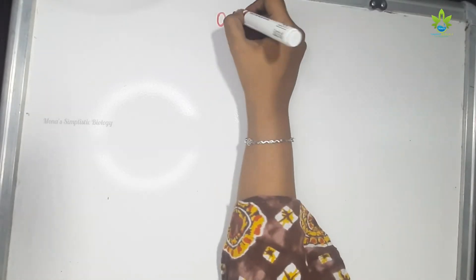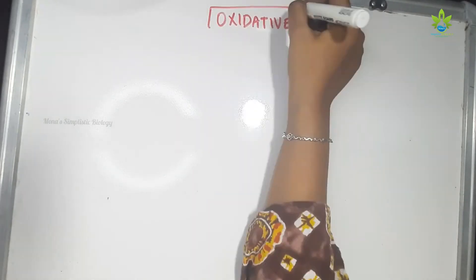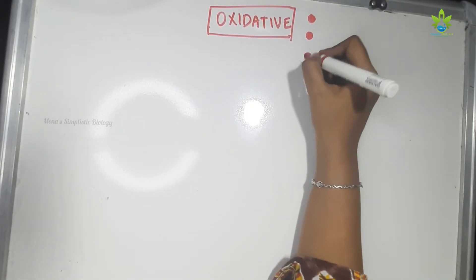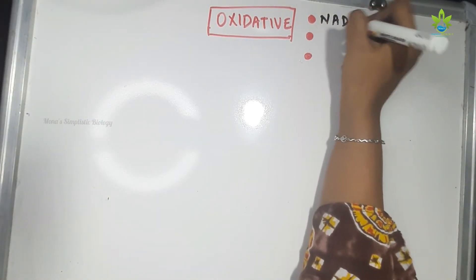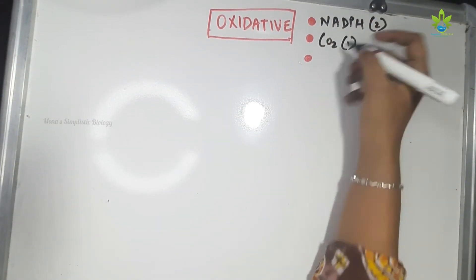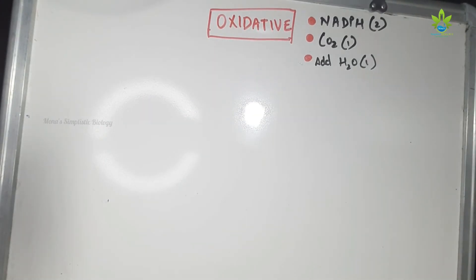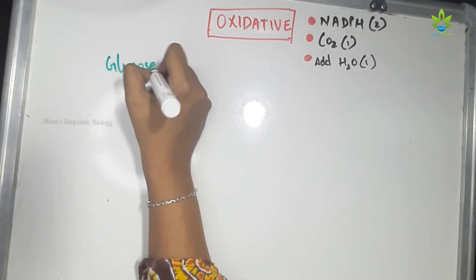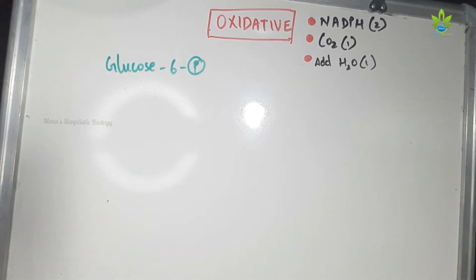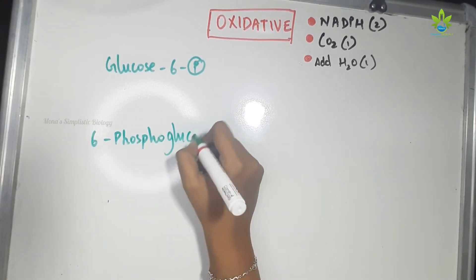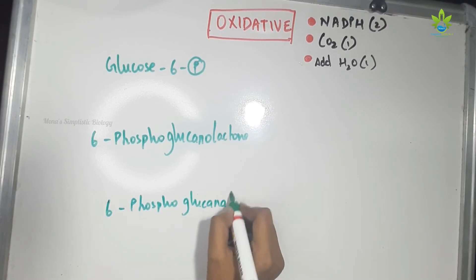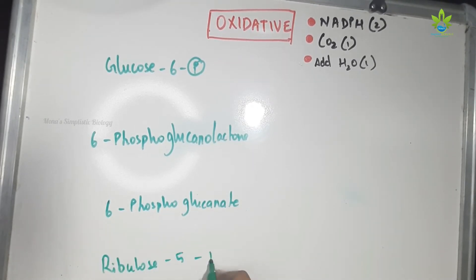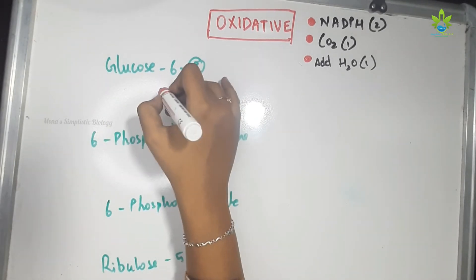Now let's see how easy it is to memorize this pathway. In the oxidative phase, there are 3 important products: NADPH, CO2, and H2O. There are 3 reactions with 4 intermediary products. First is glucose-6-phosphate. Second is glucose-6-phosphogluconolactone. Third is 6-phosphogluconate. And finally, ribose-5-phosphate.